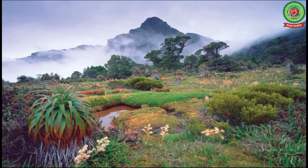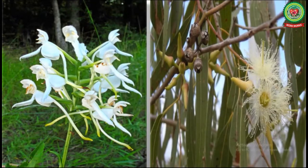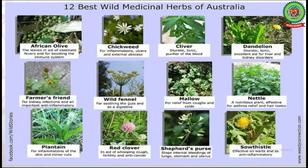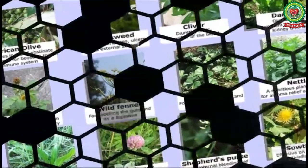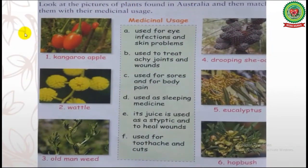In this paragraph it is given that 25,000 species of plants are found in Australia, including rare orchid and eucalyptus. Most of the plants are used to eat by Australians — like chickweed, mallow, wild fennel, nettle, etc. Many plants also have medicinal value, like African olive, chickweed, wild fennel, mallow, nettle, etc.